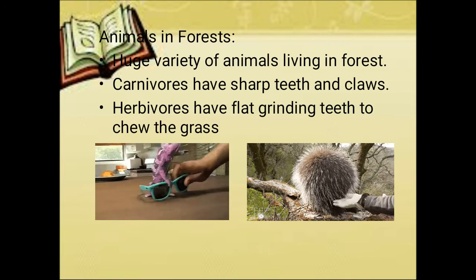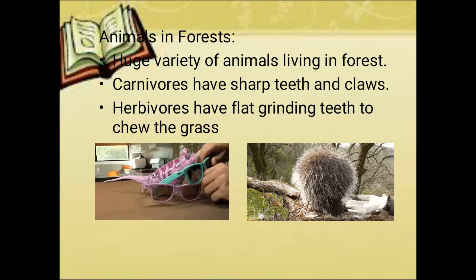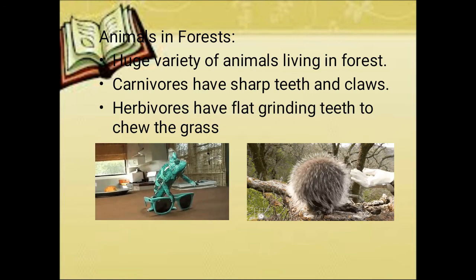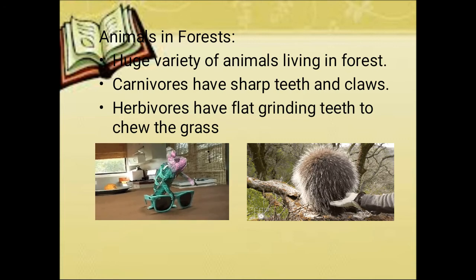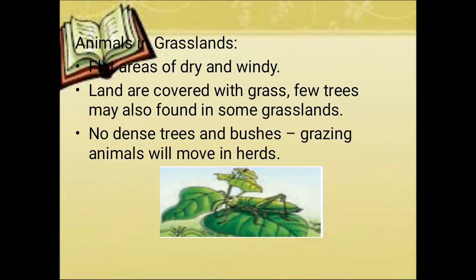Similarly, the porcupine has quills all over its body. As and when a predator attacks, it starts to shoot out the quills. Then how will the animals in grasslands adapt? Grasslands have dry and windy temperature. Some fire outbreaks will occur. The animals must burrow a hole in order to adapt to those fire outbreaks, and they also have some special features.